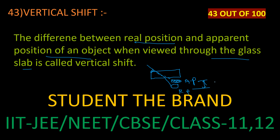So the difference between real position and apparent position is called vertical shift. The difference between the real position and apparent position of an object when we look through a glass slab is the vertical shift. That's the concept.